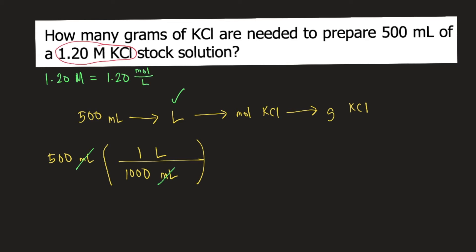So if you have 1.20 molar, that is equivalent to 1.20 moles per liter. That means for every 1 liter, you have 1.20 moles of KCl. So liters would cancel.